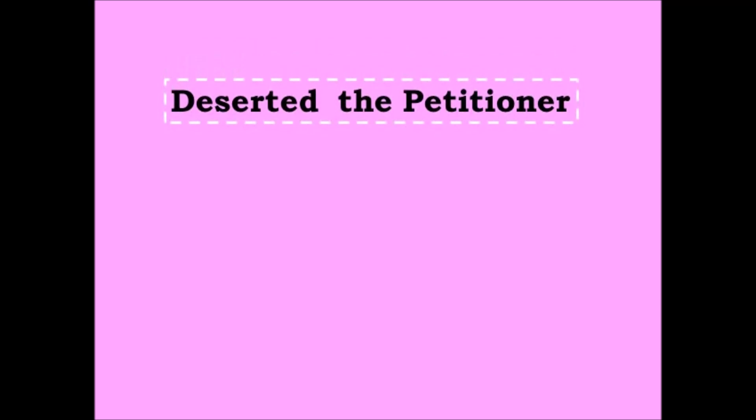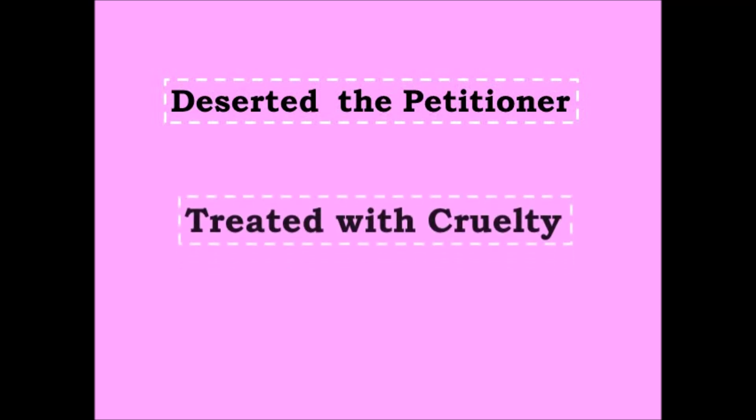If one party deserts the other — that is, one party leaves and abandons the other — that is also a ground for divorce. The final ground is cruelty. If one party treats the other with a lot of cruelty, that is a ground for divorce.